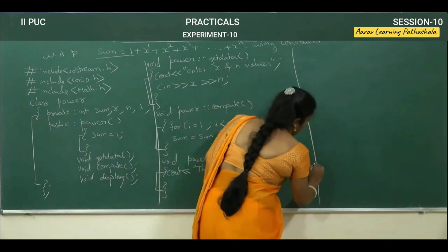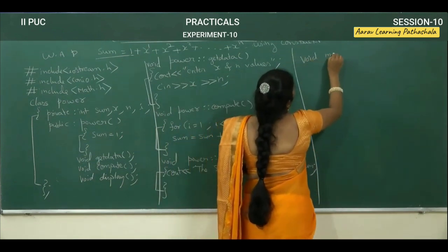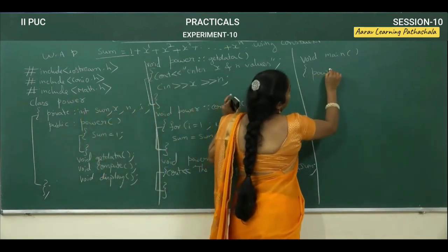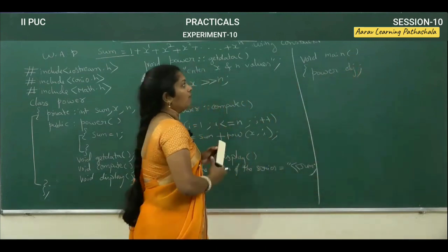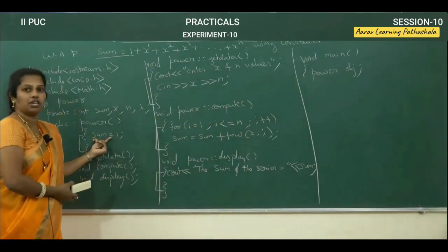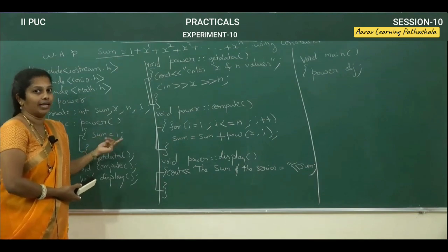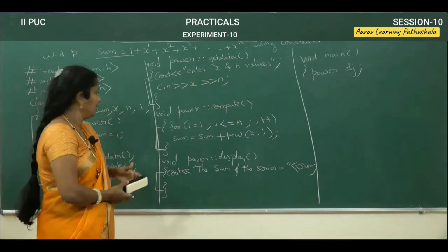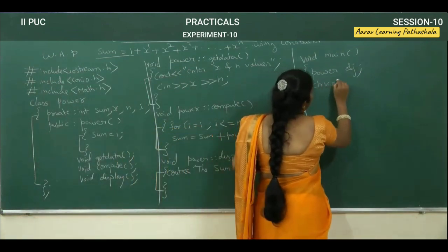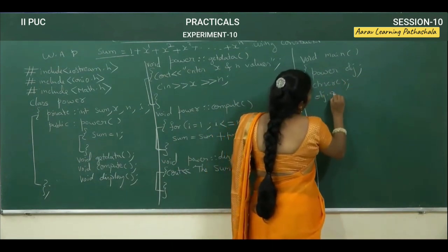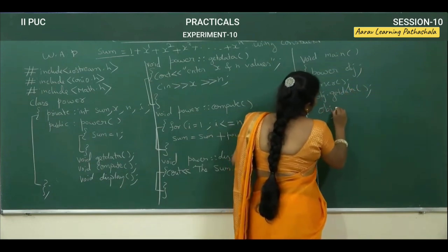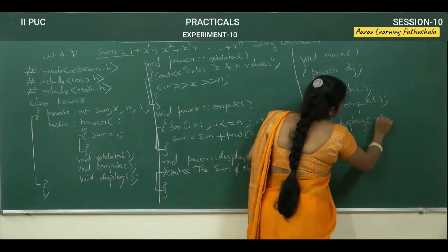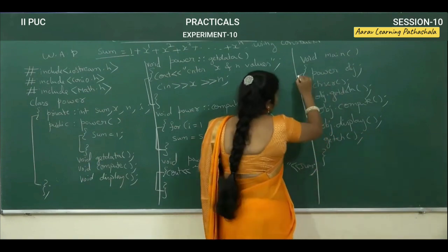Now we will write the main program: void main. On this, create the object — class name is power, object name we will write as p. When we are going to create the object, immediately the constructor function by itself will come to execute. No need to call this function separately. Next, call the functions one by one: clrscr, then object.getData function, object.compute function, object.display function. Then getch. Finally, close the main program.